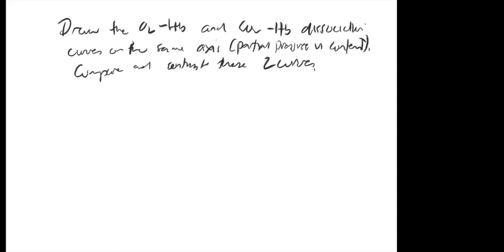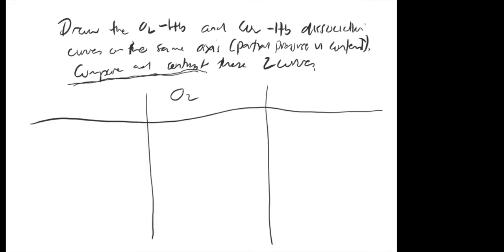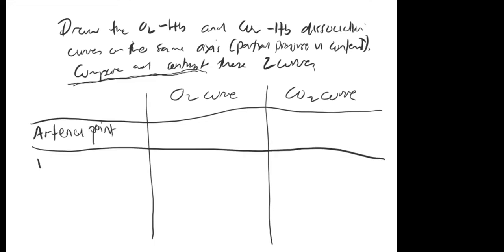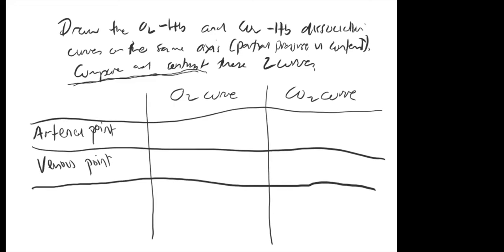When you get a question like this, you might panic — how often have we seen an O2Hb and CO2 dissociation curve on the same axis? It's not easy to find; there's one hidden in West's new edition. What I would do is leave a page blank, and for 'compare and contrast,' use a table format. Leave a page empty and go straight to a table of the O2 curve versus CO2 curve.